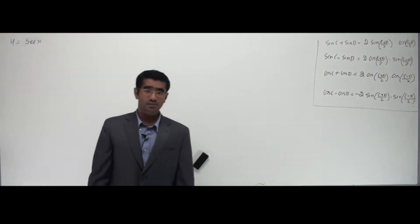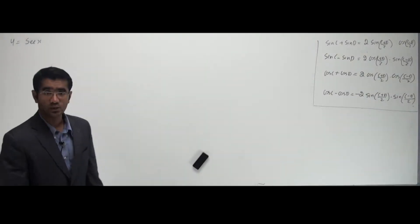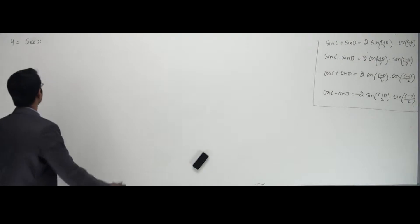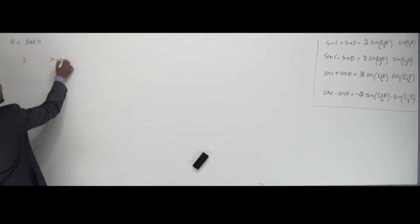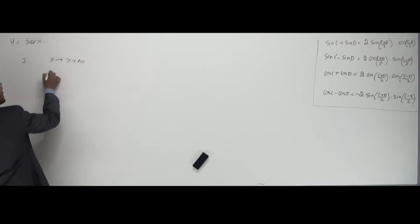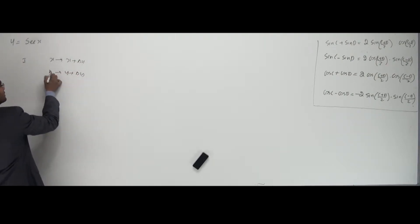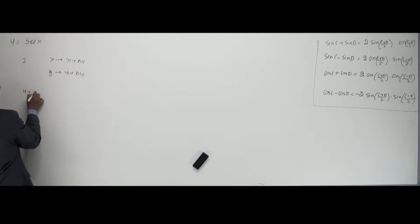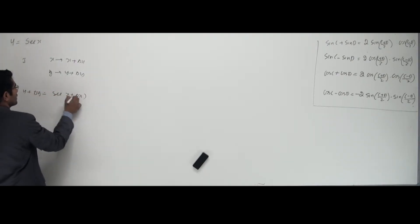Alright, now let's see how to work with the next problem. It says y is equal to secant x, using first principles. So what's the first stage? Let's work on it. x would increment by x plus delta x, and y would be y plus delta y. Substituting these, y plus delta y is equal to secant of x plus delta x.